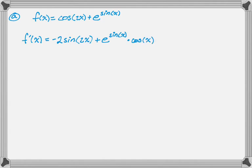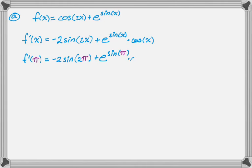Now we want to evaluate this at π, so I'm going to fill in π's across the board. So f'(π) is going to be negative 2 sine of 2π. I'm a big advocate of filling in so that you can check your work. Now I need to figure out the values of sine of 2π, sine of π, and cosine of π.